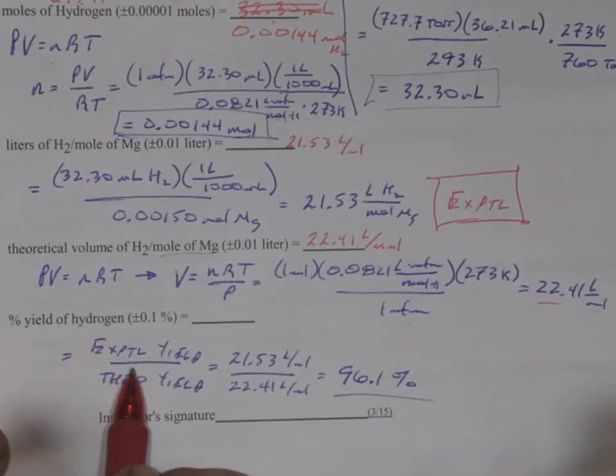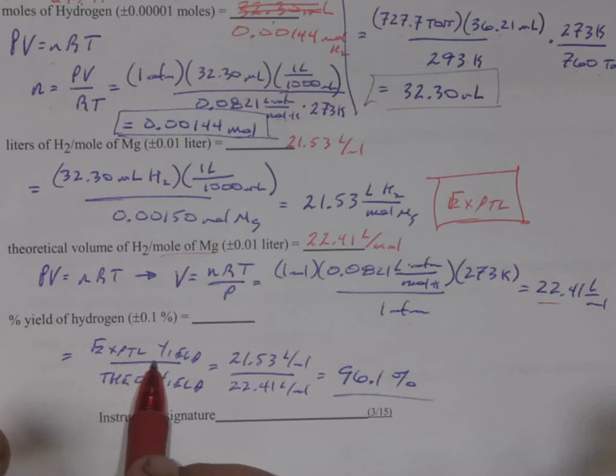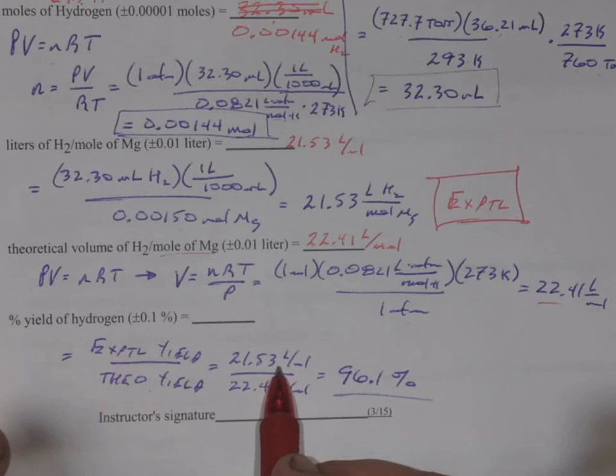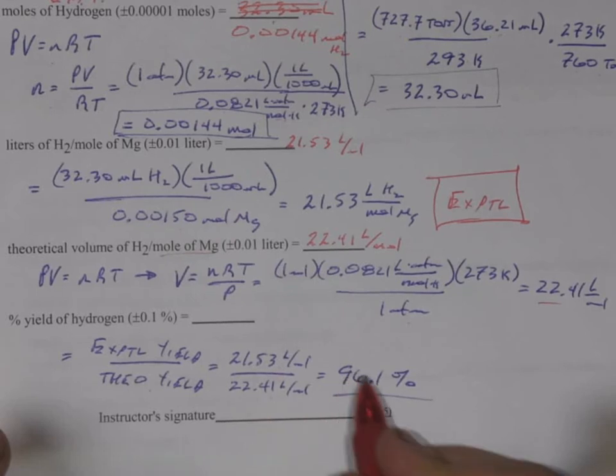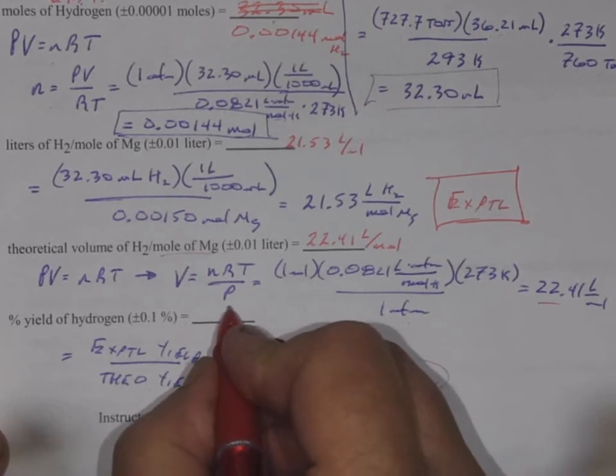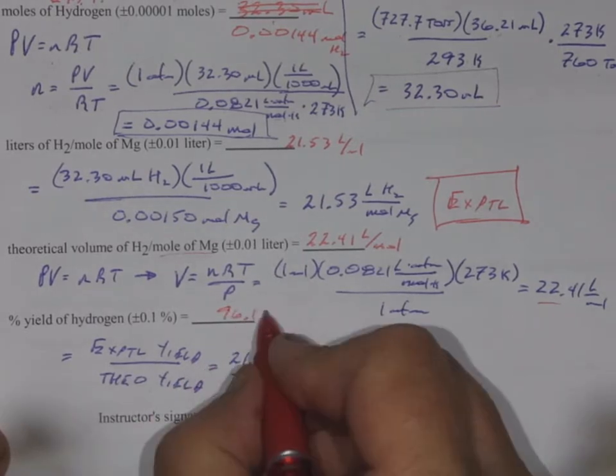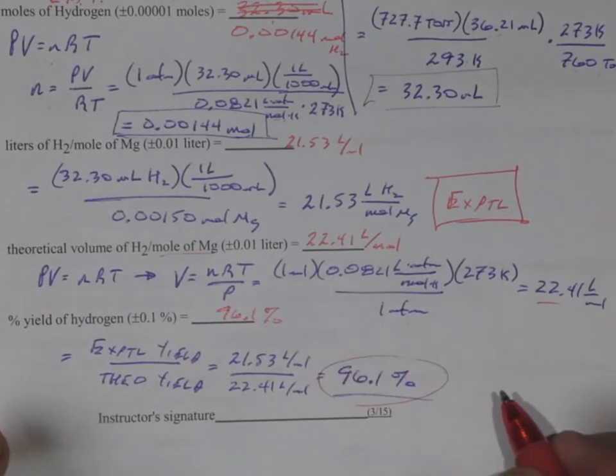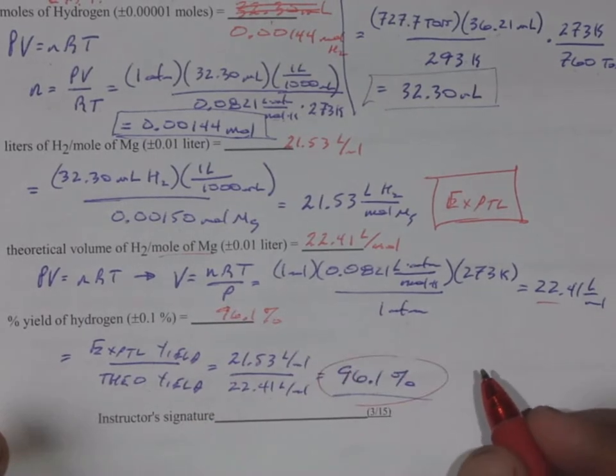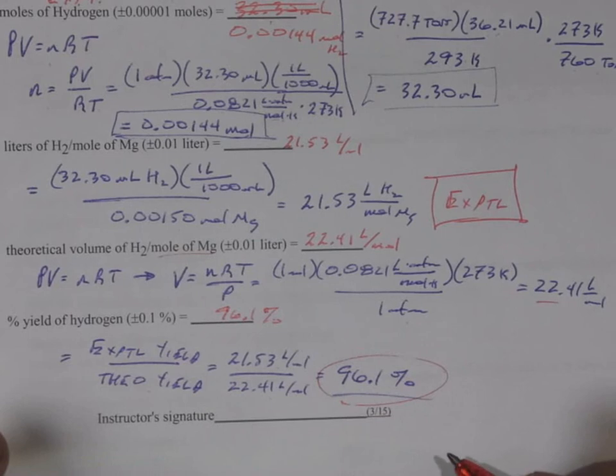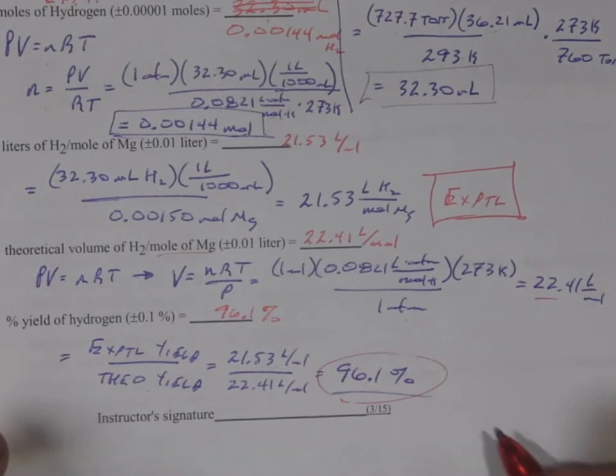And then lastly, we want to have a definition of how well this lab worked. And that's our percent yield of hydrogen, which we are defining as the experimental yield dividing by the theoretical yield. And for my numbers, I had 21.53 liters per mole divided by 22.41 liters per mole, which gave me a 96.1% recovery there. And actually doing this lab, typically the results probably two-thirds plus of students are within a percent of 100. It seems we're maybe just a little bit above 100, like the average is 100.5 or something. But the experiment works very, very well.